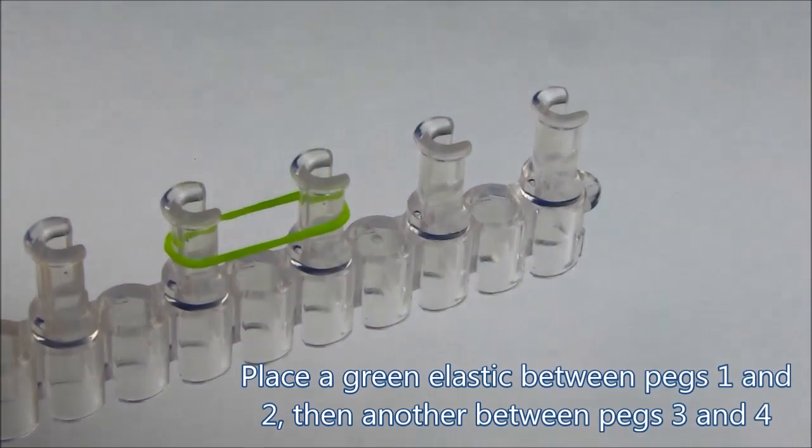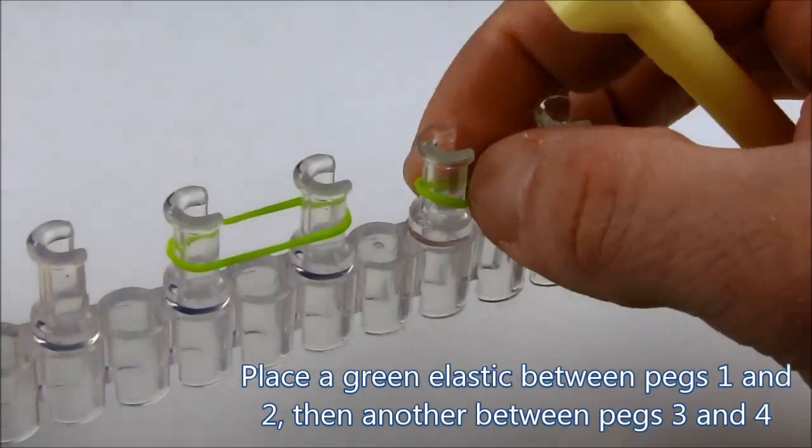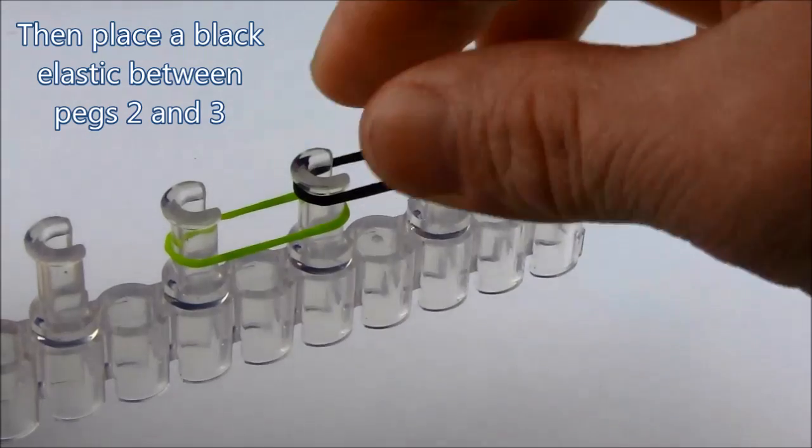Place a green elastic between pegs 1 and 2 and then another between 3 and 4. Then place a black elastic between pegs 2 and 3.